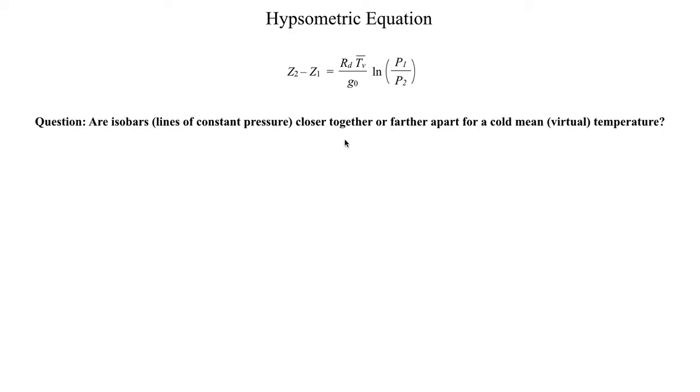So one thing that we can do to help us answer this question is we can rewrite the left-hand side of this equation here, Z2 minus Z1, as delta Z, which is just the difference, the thickness between the two pressure levels. So if Z2 is the height at which pressure 2 occurs and Z1 is the height at pressure 1 occurs, then the distance that separates those two pressure levels can simply be abbreviated as delta Z.